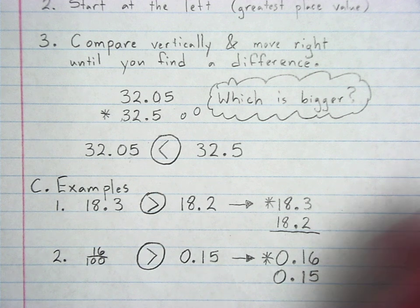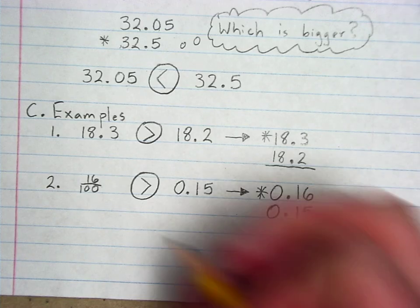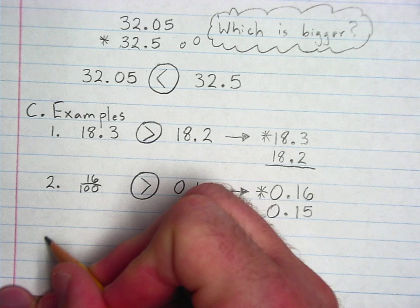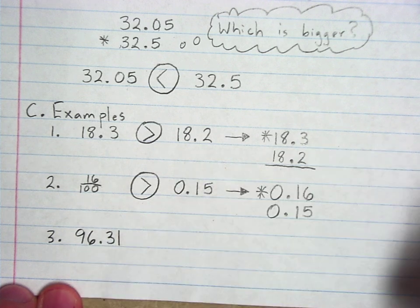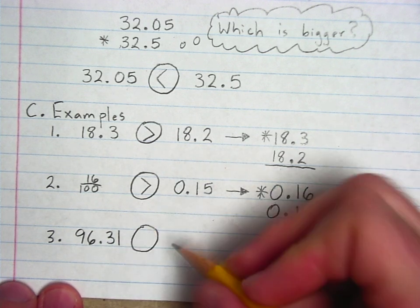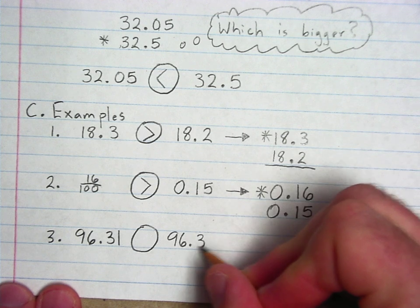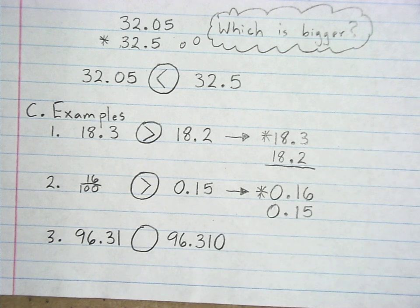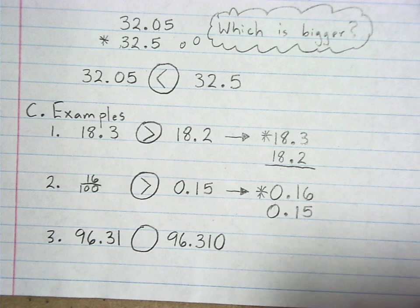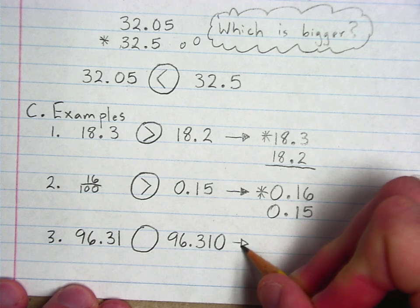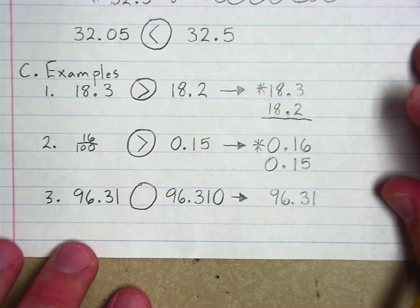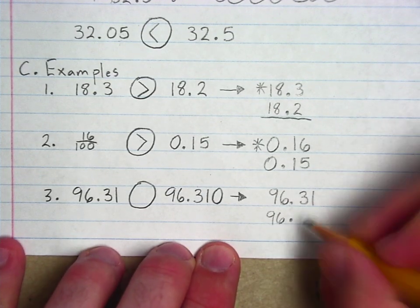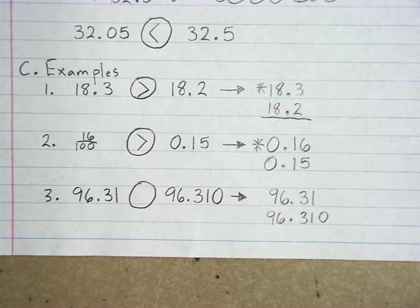We will do one more example together, and then I will let you go. Last one. Ninety-six and thirty-one hundredths compared to ninety-six and three hundred ten thousandths. Now, these are both decimals, so we don't have to change anything. Just write 96.31. 96.310.